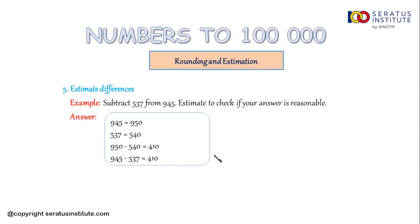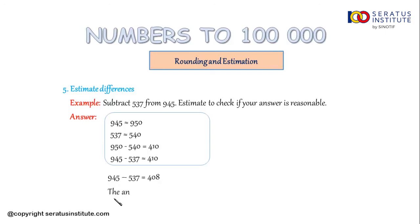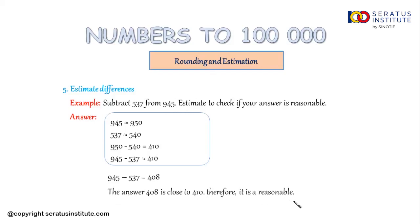If you want to check your answer, you can do it manually. So 945 minus 537 equals 408. The answer 408 is close to 410, therefore it is reasonable.